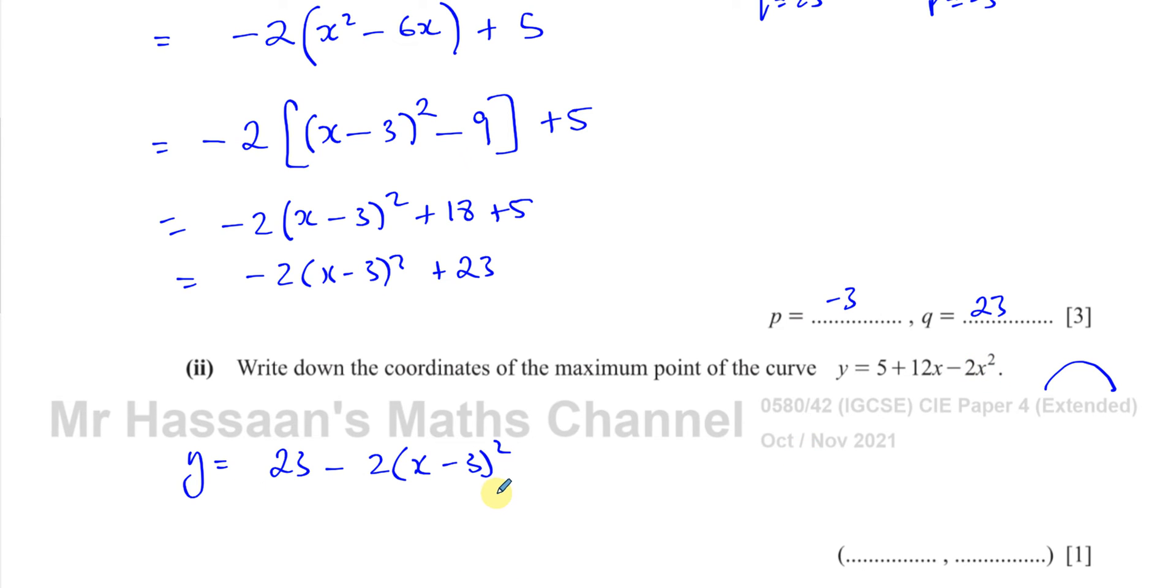And the reason why we can write out the vertex from this is because this particular expression, its maximum value it will ever be is 23. So the y value of this is going to be 23. The highest value you can ever reach is 23. Because you're always subtracting something from 23. 23 - 2 times something. So you're always subtracting something from 23.